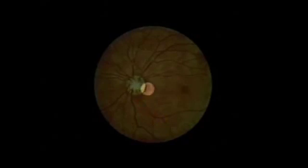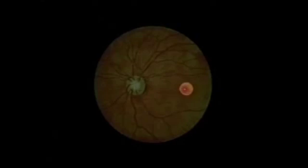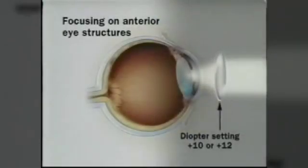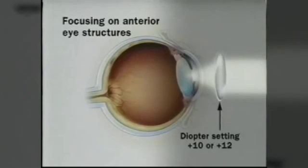Finally, examine the fovea and surrounding macula by directing your light beam laterally or asking the patient to look directly into the light. The tiny bright reflection at the center of the fovea may help orient you. To focus on more anterior structures, such as opacities in the vitreous or lens, change the diopter on the ophthalmoscope to more positive numbers, such as plus 10 or plus 12.